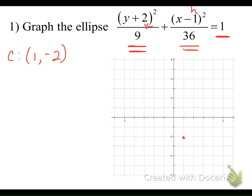We want to find the horizontal distance, which is always the number underneath the x-squared term. We take the square root of 36, and our horizontal distance is 6 units. We come out 6 units to the right and 6 units to the left — we're a little off the grid, so we'll just mark a point there.